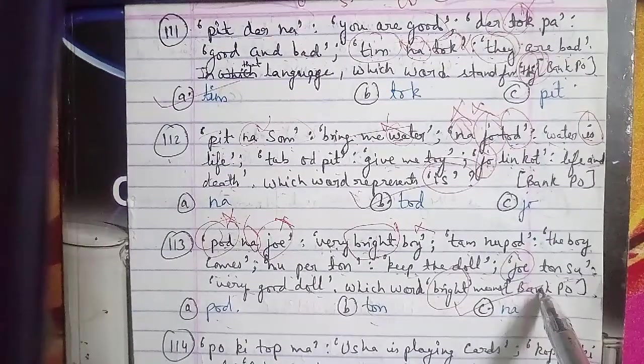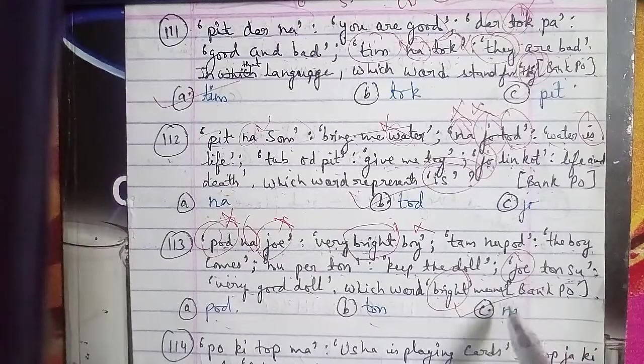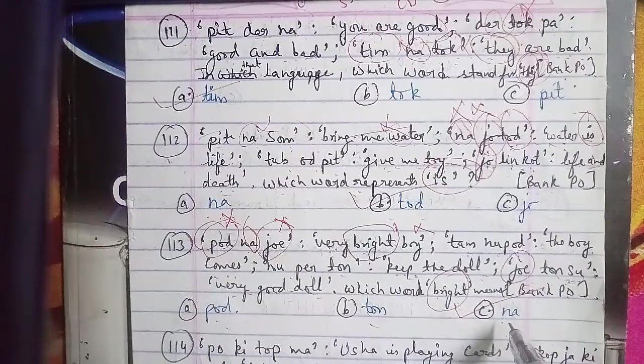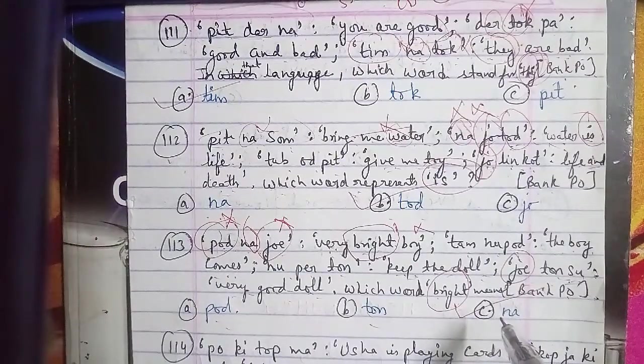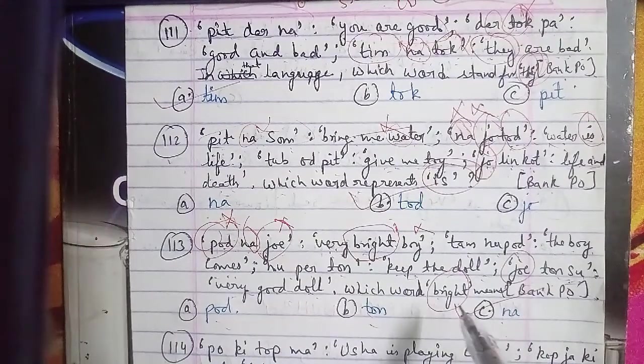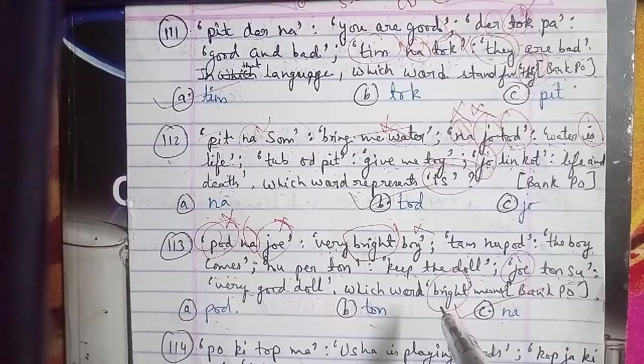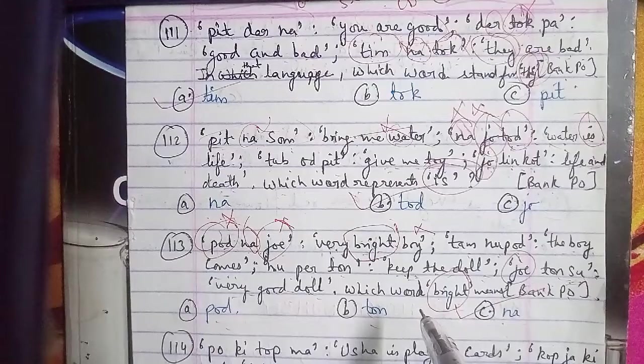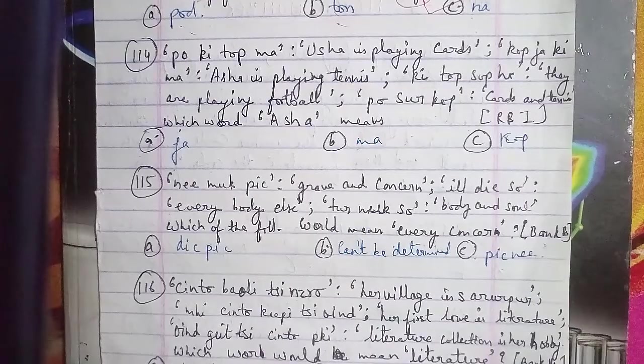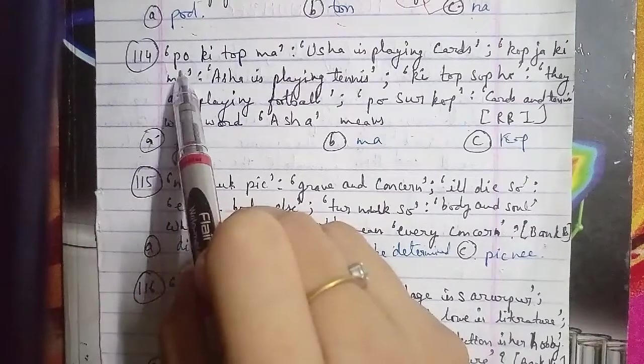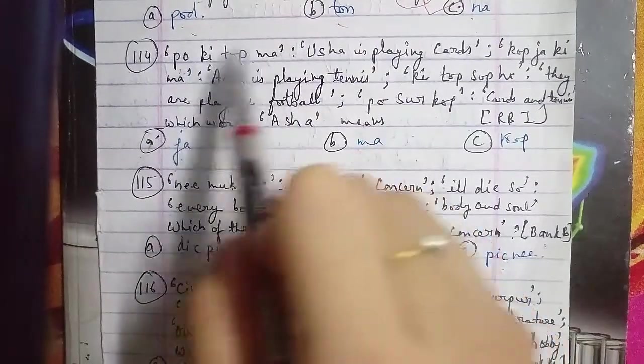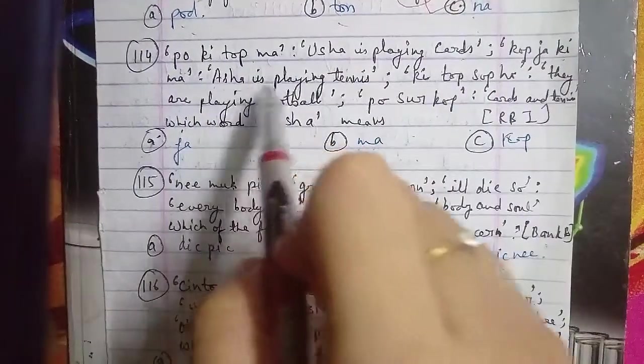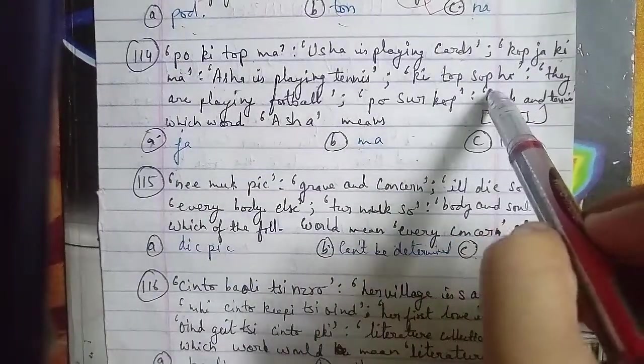Moving to question 114. Here you can see po ki top ma is coded as 'Usha is playing cards', kok jo ki ma is coded as 'Asha is playing tennis', ki top so ho is 'they are playing football', and pos or kop is 'cards and tennis'. We need to find the code for Asha. This was asked in RBI exam.